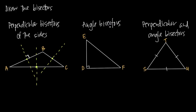What about angle bisectors? When you're asked to draw an angle bisector, you draw a line through each corner of the triangle that bisects the angle into two equal parts. In triangle DEF, for angle D — a 90-degree angle indicated by the right angle symbol — we draw a line that divides it into two equal 45-degree angles. For angle E, we draw the line that divides that angle into two equal angles.